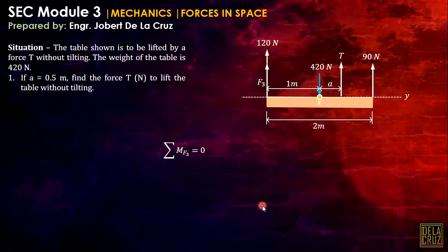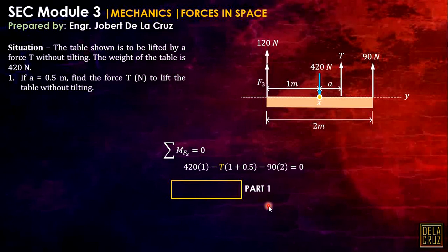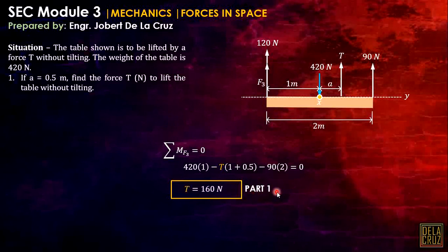Summing moments about force F3 along this line: since A is 1.5, we can solve for T. The equation is: 420 times 1 (moment arm) minus T times (1 plus A, which is 1 plus 0.5) plus 90 times moment arm 2, plus 160 Newtons. By looking at just one view, we solve for T.